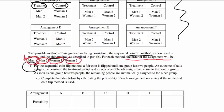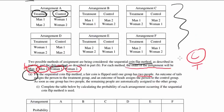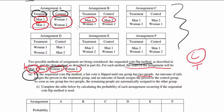For the sequential coin flip method, a fair coin is flipped until one group has two people. Because once we have two people in one group, the other two go into the other group. An outcome of tails assigns a person to treatment, so one side is treatment and the other is control. For example, if man 1 flips and gets treatment, he goes in. If man 2 gets control, he goes in. Since we don't yet have two people in a group, we continue — woman 1 flips the coin, and her result determines woman 2's assignment.